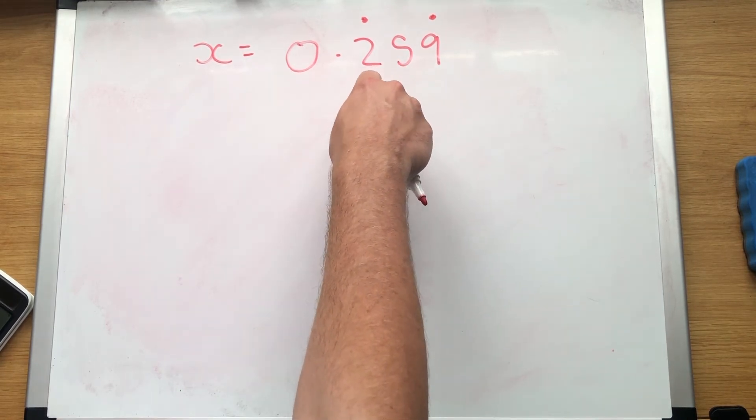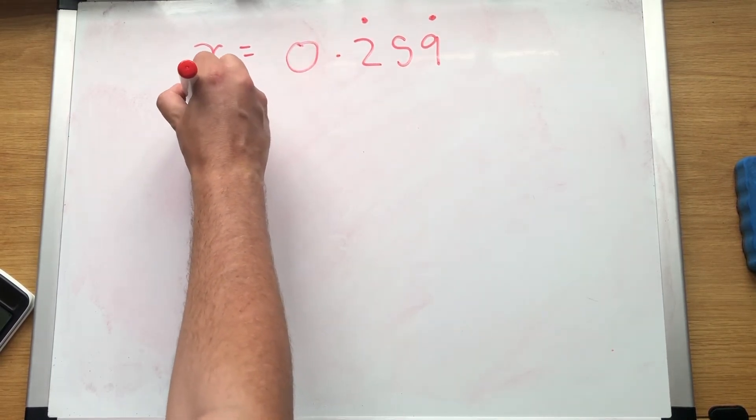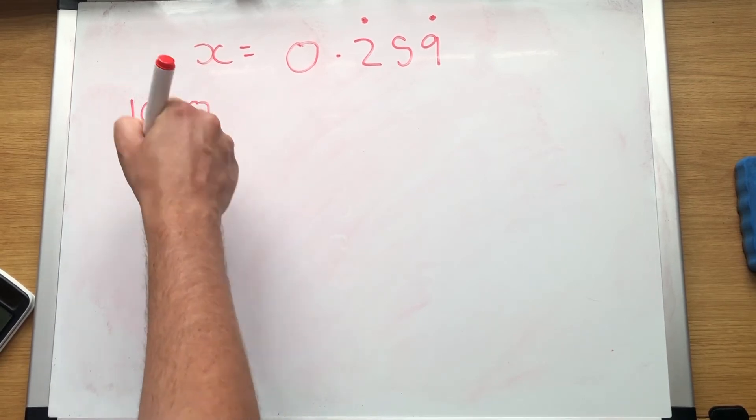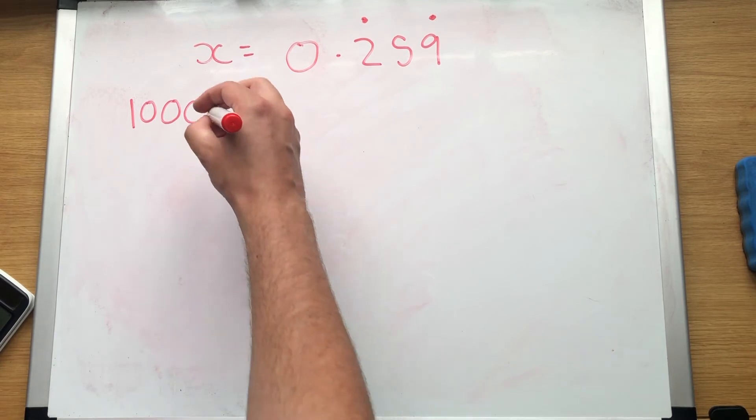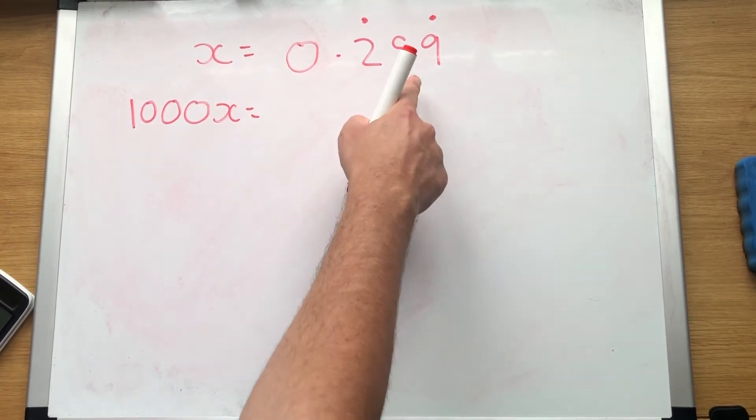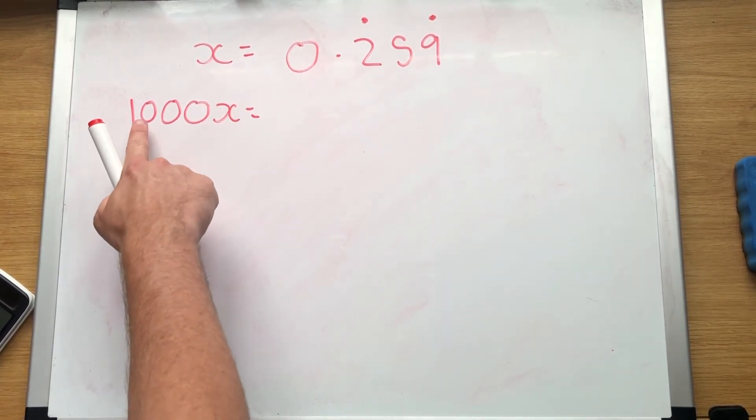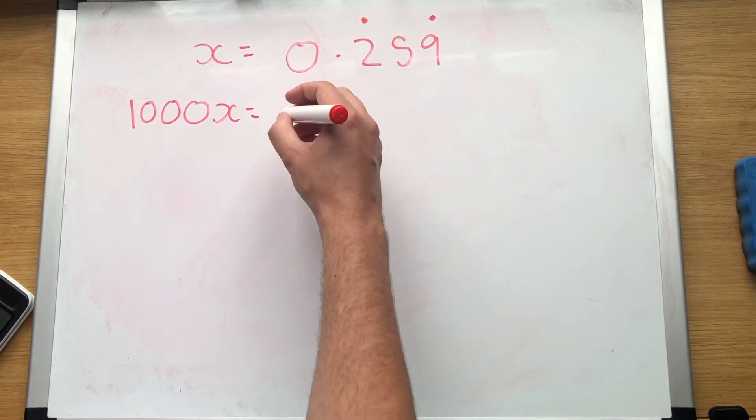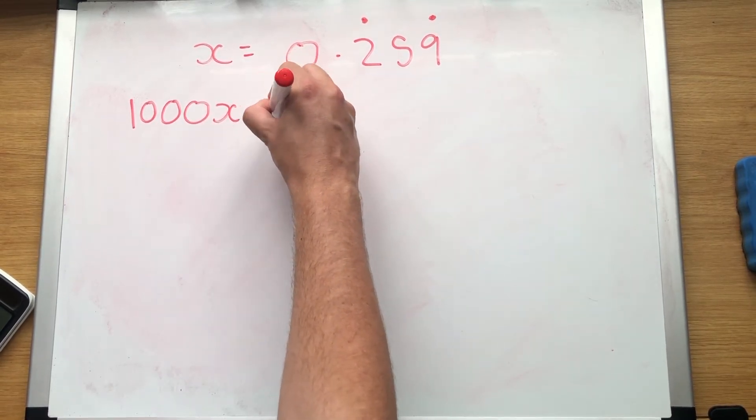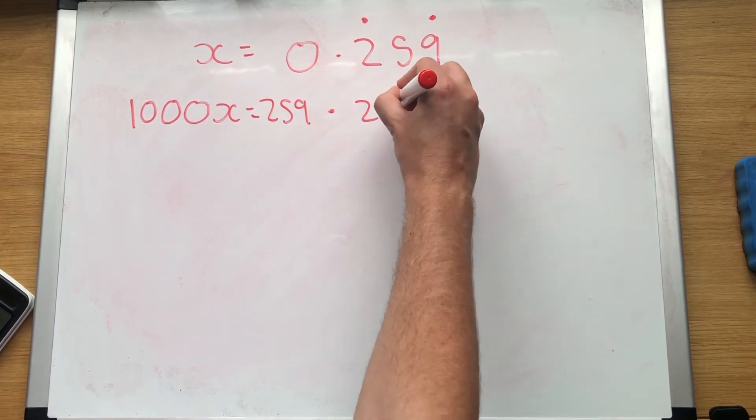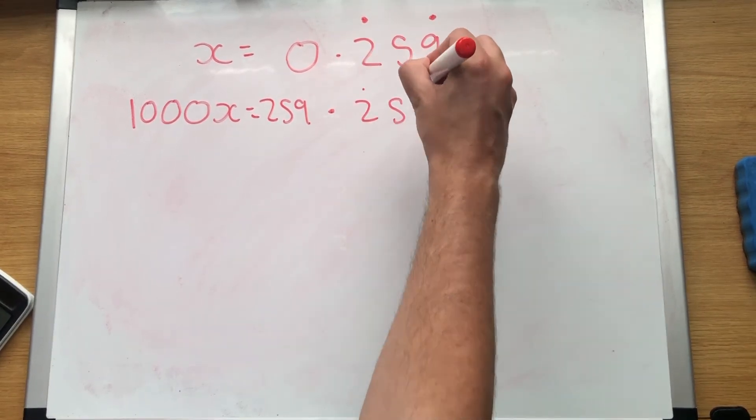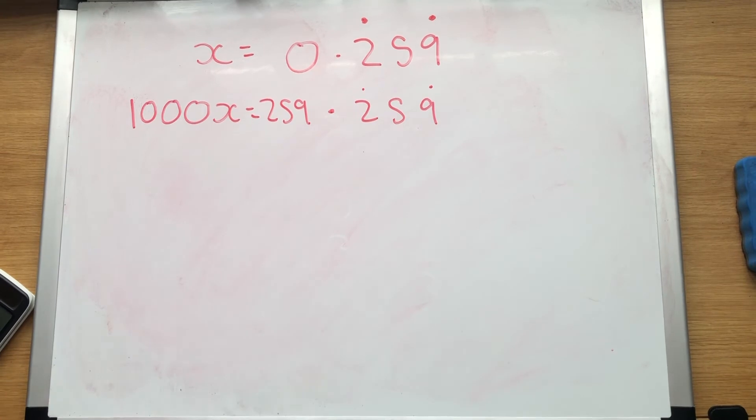Our next step: 1, 2, 3 numbers after the decimal place. So 1, 2, 3 zeros. And then a 1, so 1,000x. Now we want to move everything because it's 1,000x with 1, 2, 3 zeros, 3 to the left. 2, 5, 9. Decimal point stays exactly in the same place. And because it's 2, 5, 9 forever and ever, when we move it to the left, it just stays as 2, 5, 9 forever and ever.